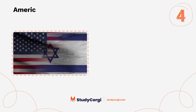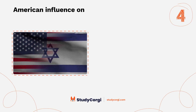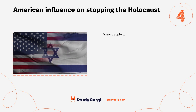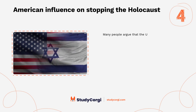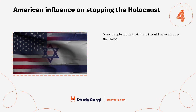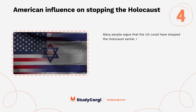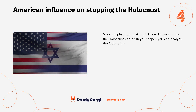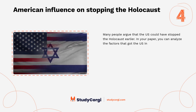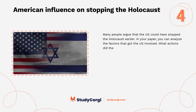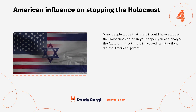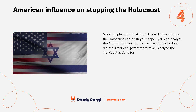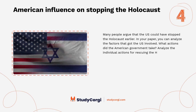American influence on stopping the Holocaust: Many people argue that the U.S. could have stopped the Holocaust earlier. In your paper, you can analyze the factors that got the U.S. involved, what actions the American government took, and analyze individual actions for rescuing Holocaust victims.